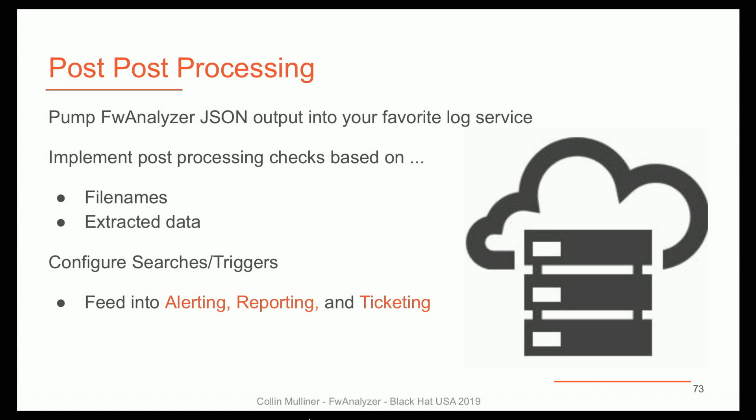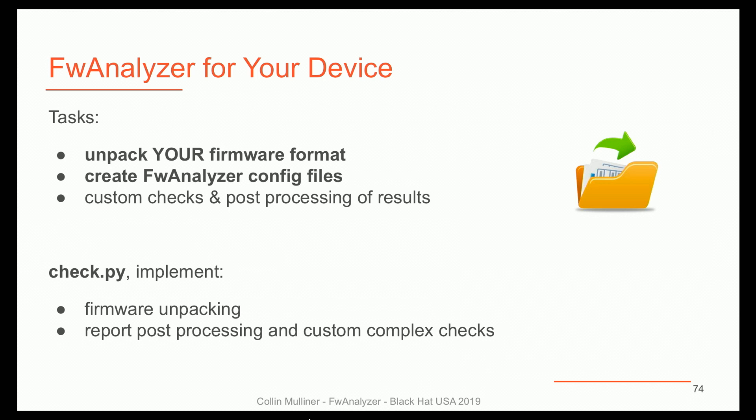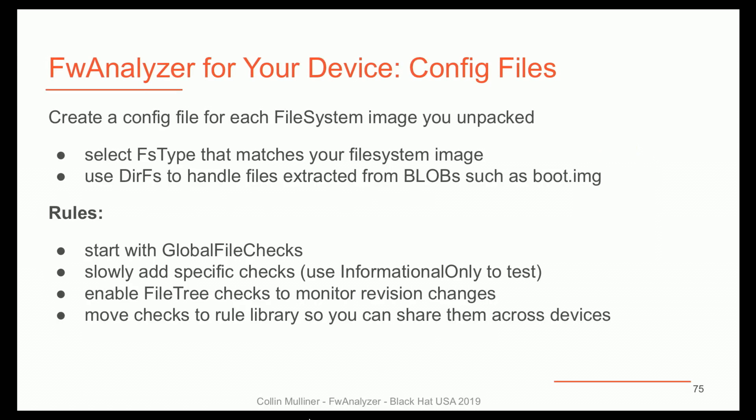So if you want to use this tool, the main thing you have to do is build an unpacking step and create some config files. In your check.py version you have to build a firmware unpacker and maybe add some post-processing. You want to create config files for all the different file system images, select the appropriate file system type, start with some really easy global check rules, and then slowly add more specific rules. Move as many checks as possible into checking libraries so you can very easily use the same check for both your production and development analysis steps.